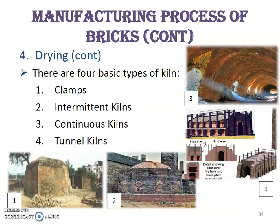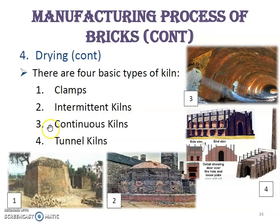There are four basic types of kilns. First, we have clamps. Then we have intermittent kilns. Then we have continuous kilns. And lastly, we have tunnel kilns. These are the kiln types used in the drying process.